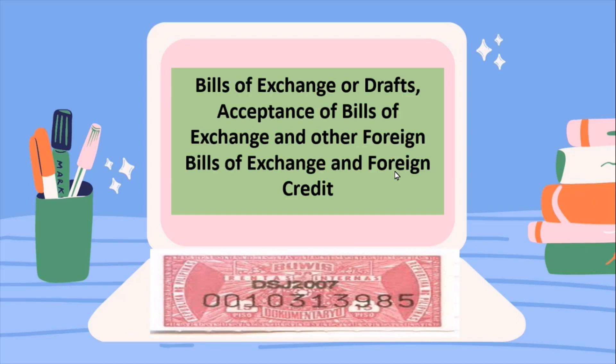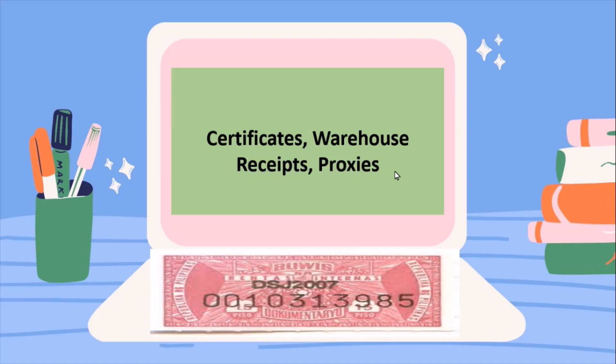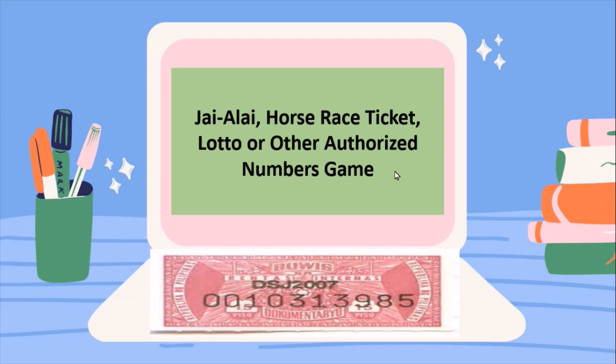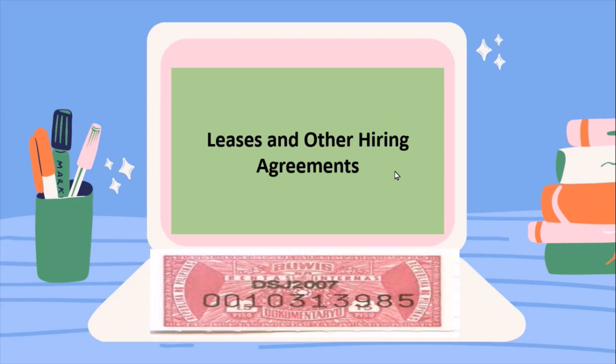We also have debt instruments, bills of exchange or drafts, acceptance of bills of exchange, other foreign bills of exchange, and letters of credit. Then we have life insurance policies and annuities, pre-need plans, certificates, warehouse receipts, proxies, and winnings from games such as Hi-Low, lottery tickets, Lotto, or other authorized numbers games.